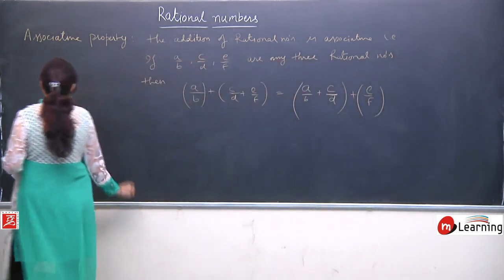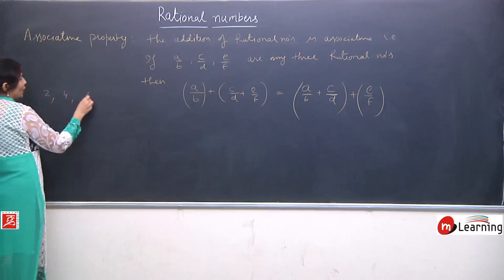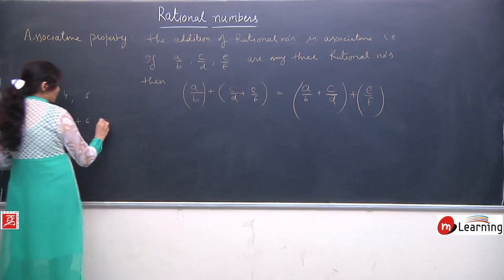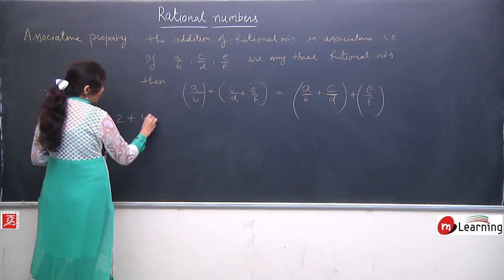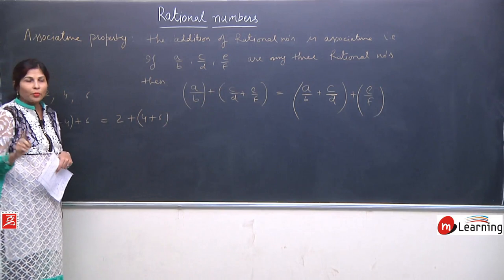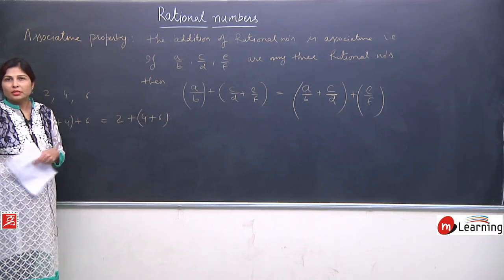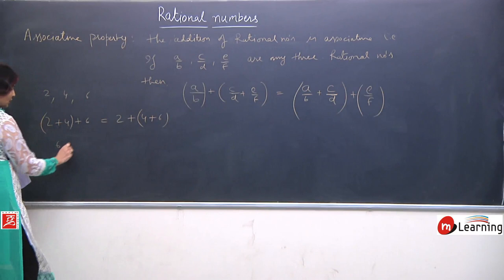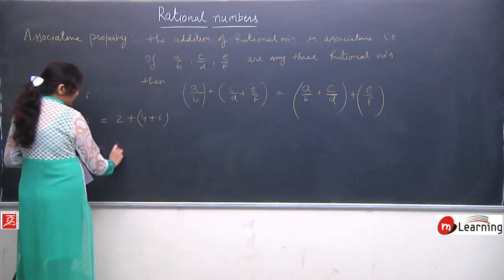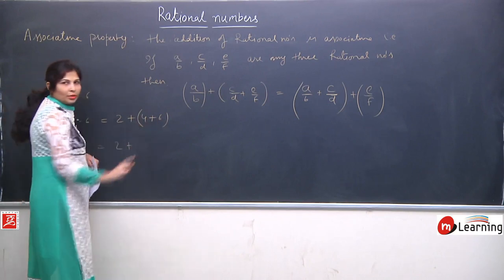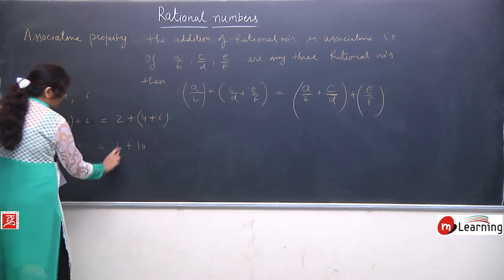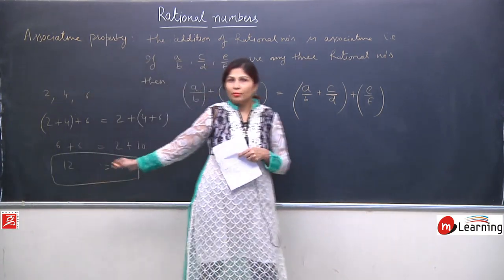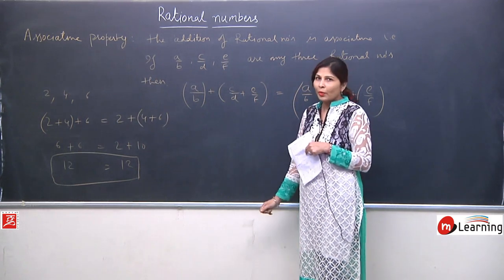Before starting with rational numbers, let me explain associative property with simple numbers. Take 2, 4, and 6. Either I can write (2 + 4) + 6 or 2 + (4 + 6) — the answer should be the same. Solving the first: bracket gives 4 + 2 = 6, then 6 + 6 = 12. For the second: bracket gives 4 + 6 = 10, then 2 + 10 = 12. Both give 12.